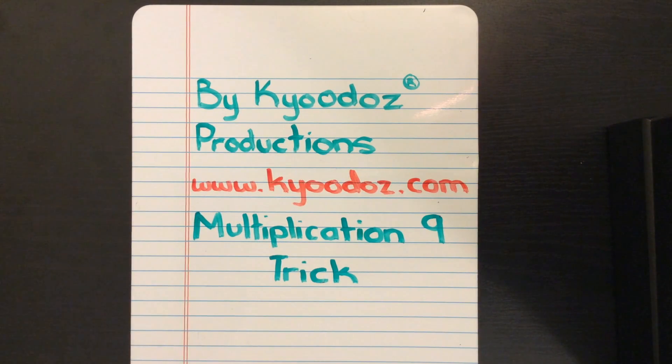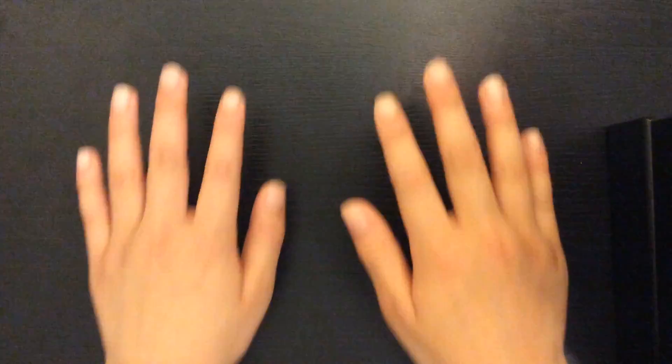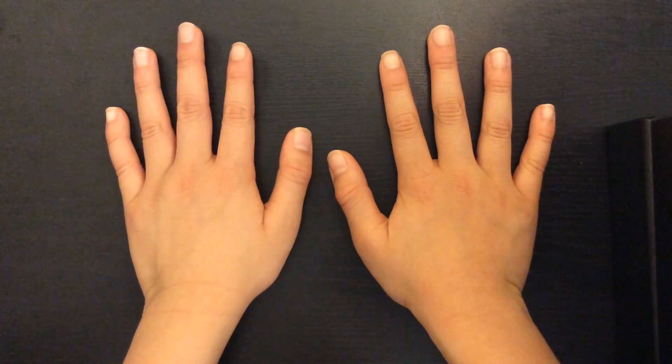Hello everyone, I'm going to show you the finger trick to do your nine times tables with no memorizing. Yes, no memorizing. First, spread out your ten fingers.